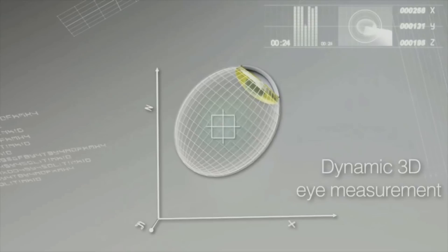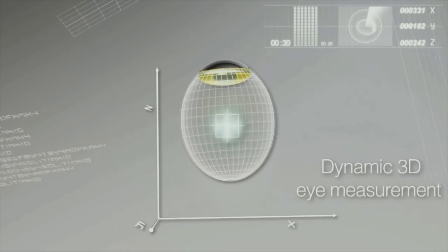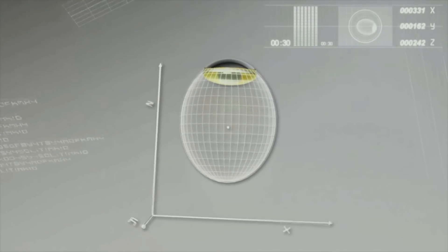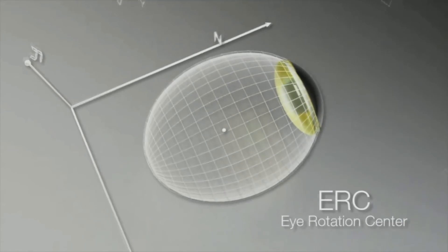This dynamic 3D measurement determines the exact spatial position of the eye rotation center, also known as the ERC.